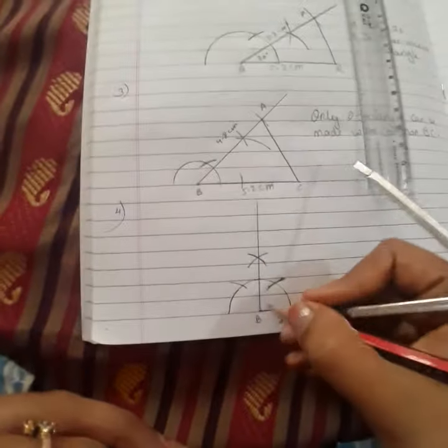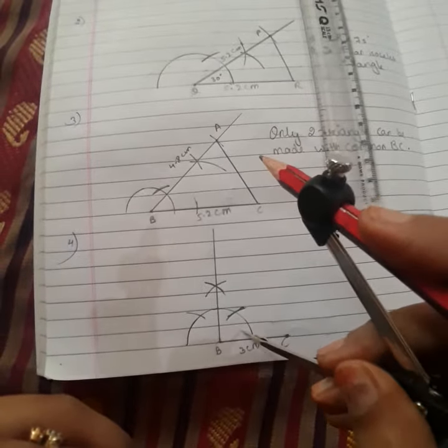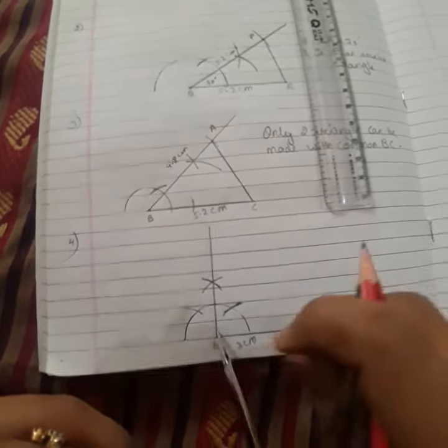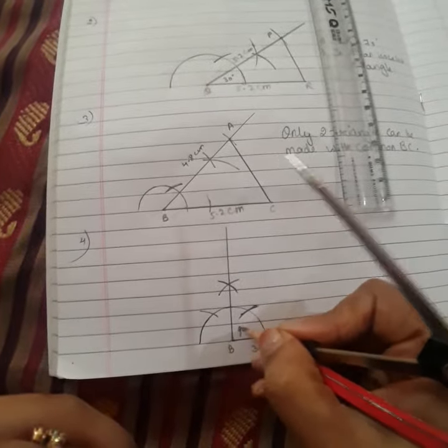This is done. Now we have to make AB because this is our 90 degree angle, so this should be 3 and this should be 4. So here I am writing 90 degree and now taking a scale and measuring the 4 centimeter.